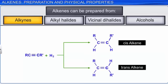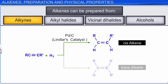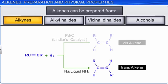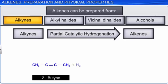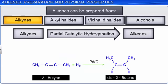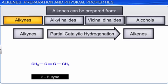Lower alkynes such as ethyne and propyne, and higher terminal alkynes, do not yield cis-trans isomers upon hydrogenation. When the catalyst used is Lindlar's catalyst, the alkene obtained shows cis-geometry. When the catalyst used is sodium in liquid ammonia, the alkene obtained shows trans-geometry. For example, 2-butyne on reduction with palladized charcoal in the presence of quinoline forms cis-2-butene. However, 2-butyne on reduction with sodium in the presence of liquid ammonia forms trans-2-butene.